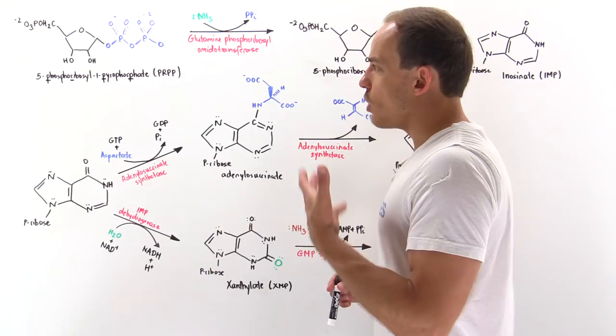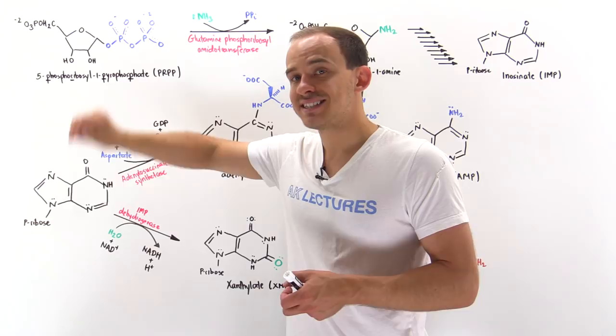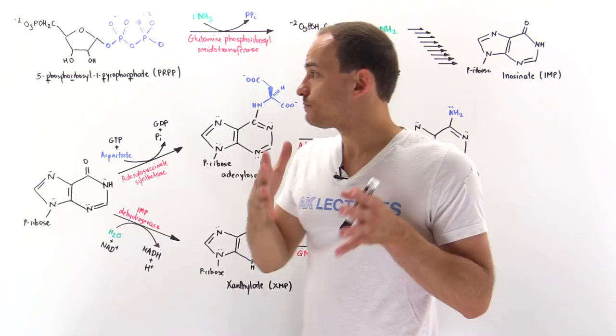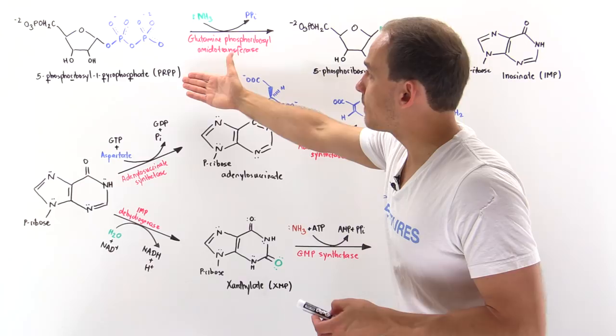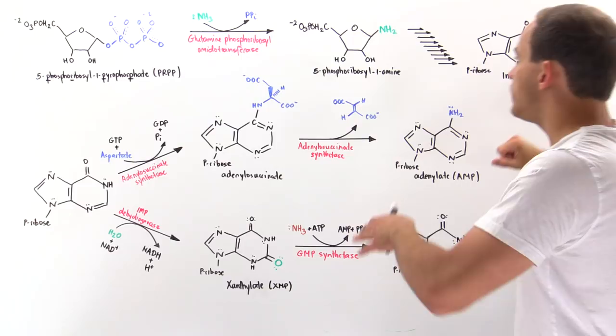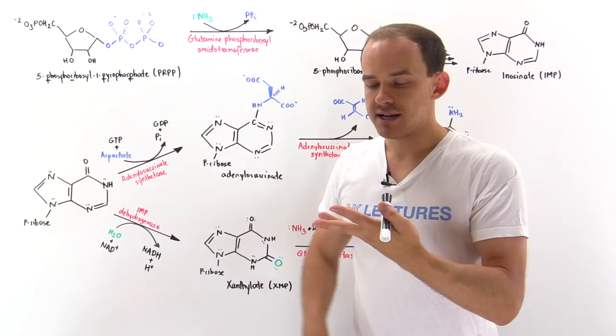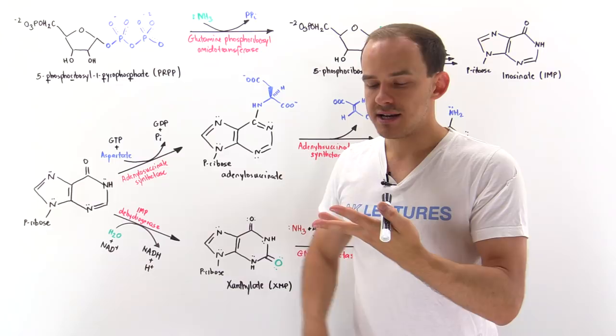This is how we build purine bases from scratch. We ultimately begin with a sugar molecule, the PRPP, and then we slowly attach atom by atom onto that sugar molecule to ultimately build our purine base. The first step is catalyzed by glutamine phosphoribosyl amidotransferase. Then we have a series of 10 steps that basically utilize glycine, aspartate, ATP molecules, and folic acid tetrahydrofolate to form the IMP. And then the IMP can be used to generate either the GMP or the AMP.